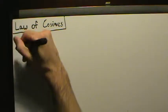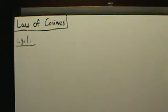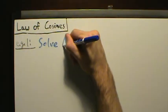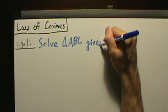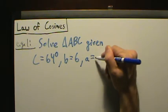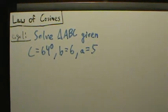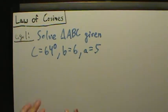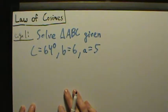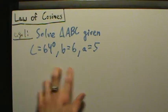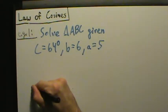Law of cosines, example one. So let's say we want to solve triangle ABC given: capital C is 64 degrees, lowercase b is 6, lowercase a is 5. We know we're going to use the law of cosines. One thing that might be helpful is just making a rough sketch in the beginning — it doesn't have to be accurate by any means.